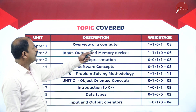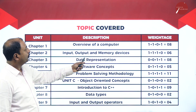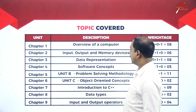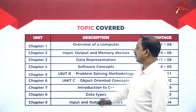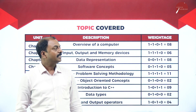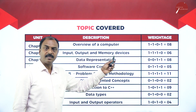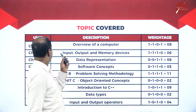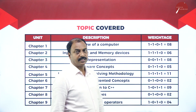Chapter two is 'Input, Output and Memory Devices.' With respect to computer system, we are going to learn the definition of input unit, output unit, and memory devices. For example, keyboard, monitor, mouse, and different types of memory devices like hard disk, CD, RAM drive, and so on. We are going to learn all the definitions with examples and how all these devices function.